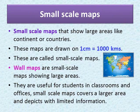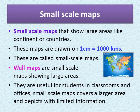Now let us learn about small scale maps. Small scale maps show large areas like continents and countries. These maps are drawn on a scale where one centimeter is equal to a thousand kilometers. Wall maps are small scale maps showing larger areas. They are useful for students in classrooms and offices. Small scale maps cover a larger area but depict limited information.